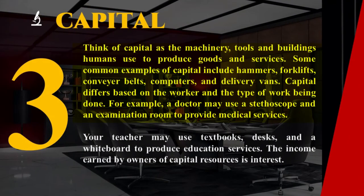Think of capital as the machinery, tools, and buildings humans use to produce goods and services. Some common examples of capital include hammers, forklifts, conveyor belts, computers, and delivery vans. Capital differs based on the worker and the type of work being done. For example, a doctor may use a stethoscope and an examination room to provide medical services. Your teacher may use textbooks, a desk, and a whiteboard to produce education services. The income earned by owners of capital is known as interest.